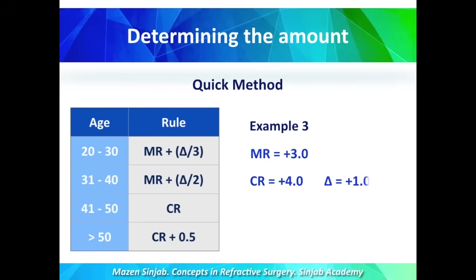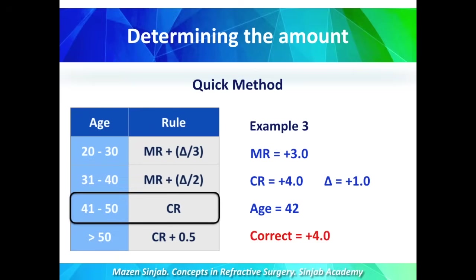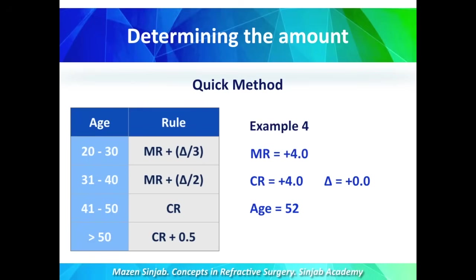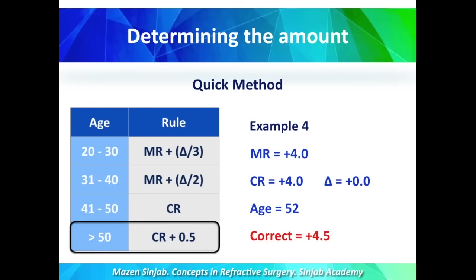Another example: a patient has manifest refraction of plus 3 diopters and cycloplegic refraction of plus 4 diopters, so delta is plus 1. The patient's age is 42 years, so we are going to correct the full cycloplegic refraction of plus 4. The last example: a patient with manifest refraction of plus 4 and cycloplegic refraction of plus 4. At age 52, there is usually no accommodation, so delta is zero. But we correct the cycloplegic refraction plus 0.5, giving us plus 4.5 diopters.